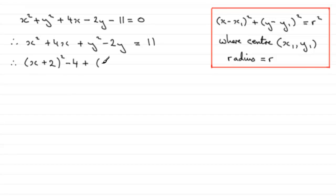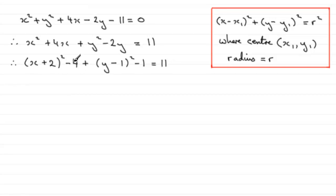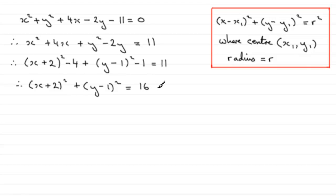We do the same for y squared minus 2y — we complete the square to get (y − 1) all squared. Half the coefficient of y gives us minus 1. If you expand the brackets you get y squared minus 2y plus 1, but there is no 1 here so we subtract it. So all of this gives y squared minus 2y, and that equals 11. Then minus 4 minus 1 is minus 5, and adding 5 to both sides gives (x + 2)² + (y − 1)² = 16.